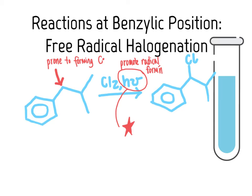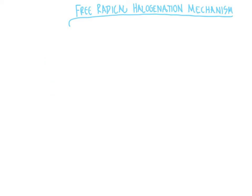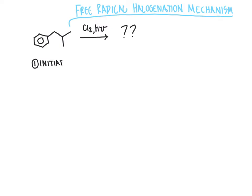Let's take a look at the mechanism so we can understand why it is the benzylic position that is prone to react. The free radical halogenation mechanism is in many ways a throwback to mechanisms learned previously. In this particular case, we start with our aromatic molecule — isobutylbenzene — reacting with chlorine in the presence of light and heat, and we'll work out how we get to the final product.